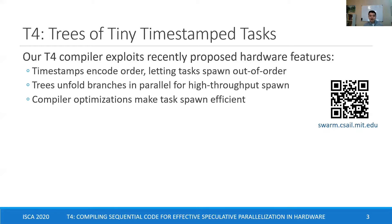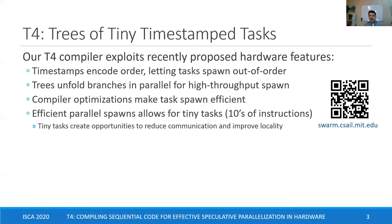As a result of these efficient parallel spawns, we can parallelize tasks as tiny as tens of instructions. This fine-grained parallelization creates new opportunities. For example, having tasks that touch as little as one memory location creates opportunities for T4 to schedule these tiny tasks to exploit locality.